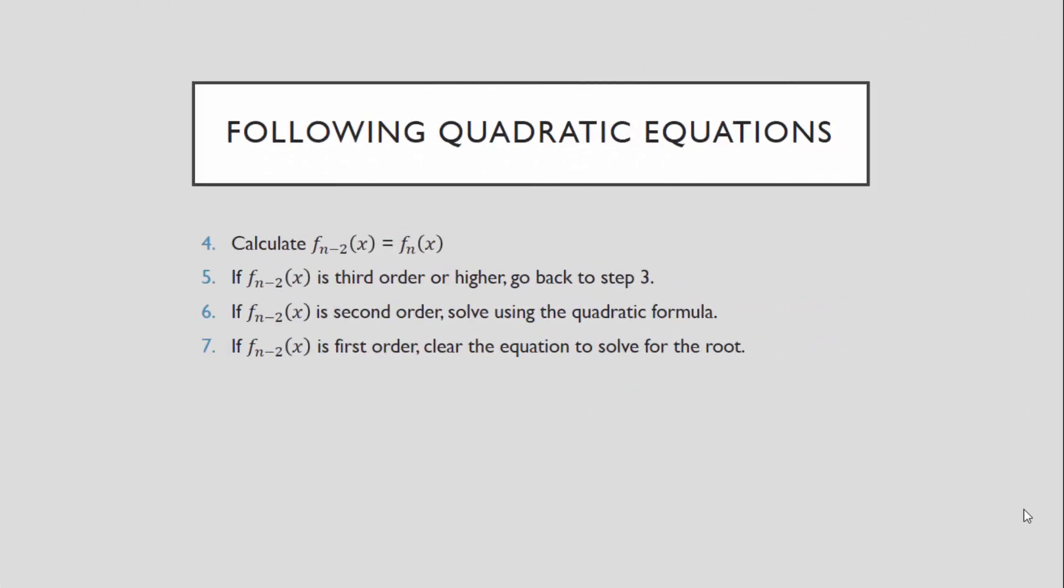For the following quadratic equations, we will calculate f of n minus 2 of x, which we will calculate using synthetic division. If this equation is of third order or higher, we would go back to step 3. If it's of second order, we would solve it using the quadratic formula. And if it's of first order, we would just clear the equation to solve for the root. This might all seem a bit complex and a bit abstract, but again, when we see the example, this will all be a lot more clear.